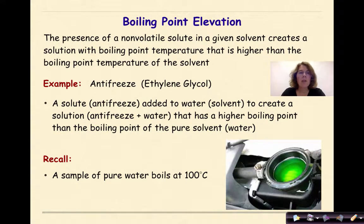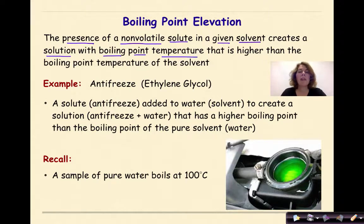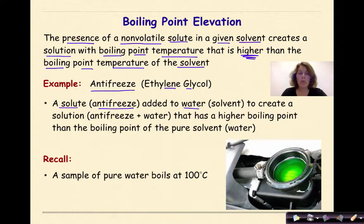Boiling point elevation. The presence of a non-volatile solute — meaning that it's not going to evaporate very quickly — in a given solvent, where again we're talking about water, creates a solution with a boiling point temperature that is higher than the boiling point temperature of the solvent. For example, antifreeze, which is also known as ethylene glycol, is a solute added to water, which is our solvent, to create a solution — antifreeze and water — that has a higher boiling point than the boiling point of the pure solvent, in this case water.